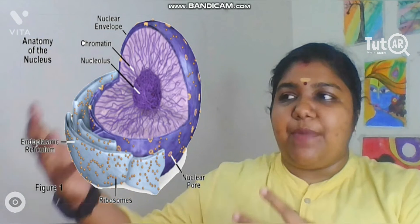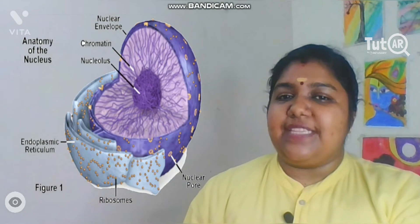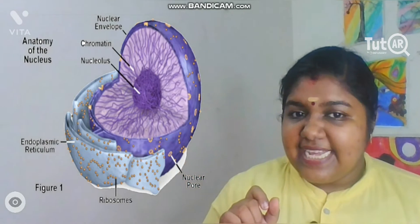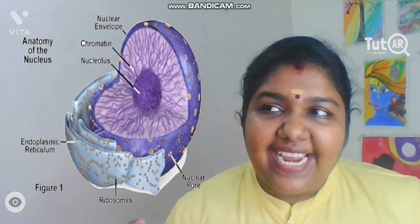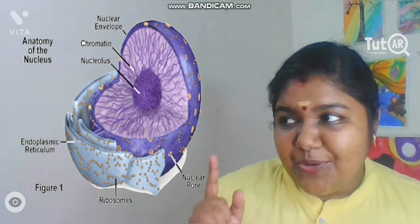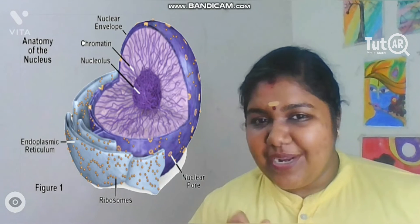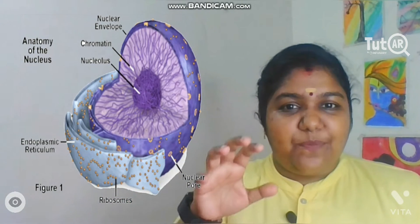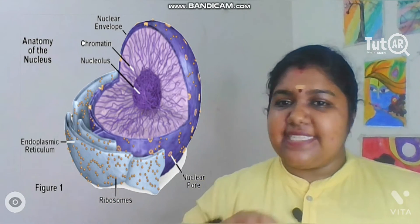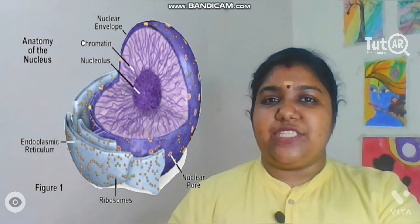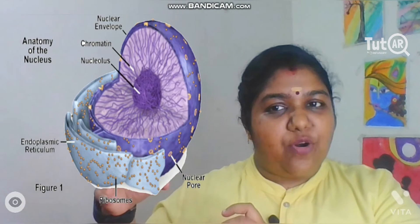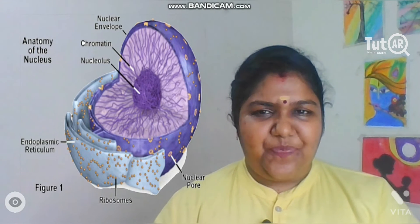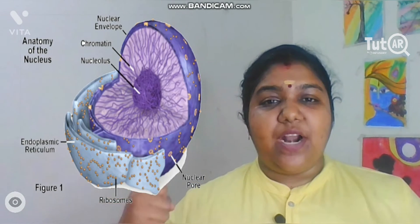The rough endoplasmic reticulum helps the nucleus produce large amounts of proteins and enzymes needed for the cell to function. The nuclear pores — tiny holes present all over the structure — allow transfer of materials between the nucleoplasm and the cytoplasm. The nucleus acts as the brain of the cell, signaling and controlling all organelle activity. It also participates in cell division by condensing chromatin fibers into chromosomes and transferring genes to the next generation.